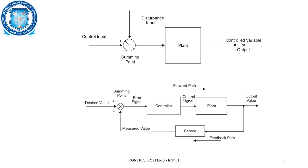In the closed loop system, the desired value is fed as an input. Along with the desired value, the measured value — that is, the output value — which is fed back with the help of a sensor, is then compared at a summing point, which is the comparator. That comparator's output is the error signal, which is then given to the controller. The controller generates a manipulated variable, which is the control signal, enabling the plant to produce the actual desired response.